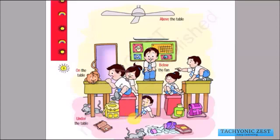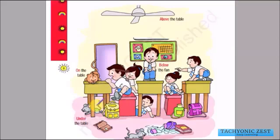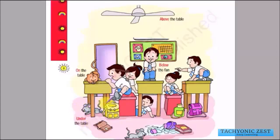This boy over here is on the table, this boy over here is under the table. This girl is on the bench — she is sitting on the bench. To summarize: the fan is above the table, the cat is on the table, the rat is under the table, the girl is on the bench.